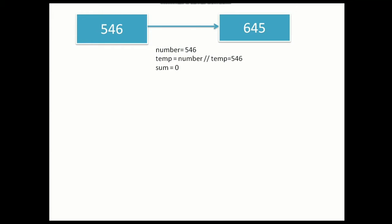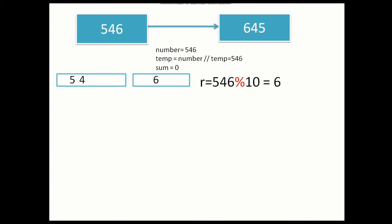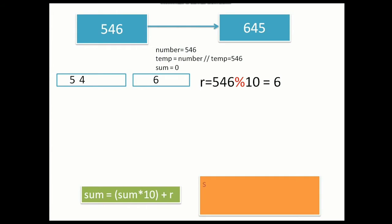We have 546 and for reversing, we need to take out 6 from 546. Whenever you want to take out the last digit from a number, you divide the number by 10 and take the remainder. For example, 44 divided by 10 gives remainder 4 — that is the last digit. Similarly, 546 mod 10 gives remainder 6. We store that using the formula: sum = sum × 10 + remainder. Initially sum is 0, so 0 × 10 + 6 = 6.